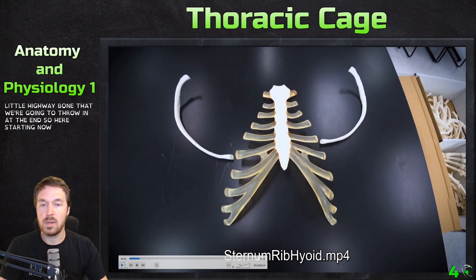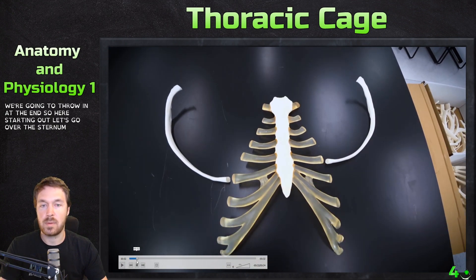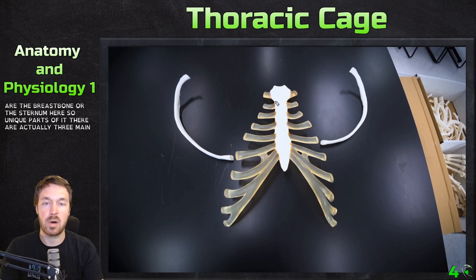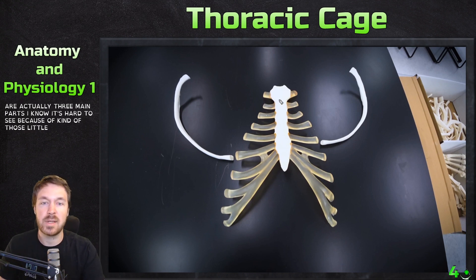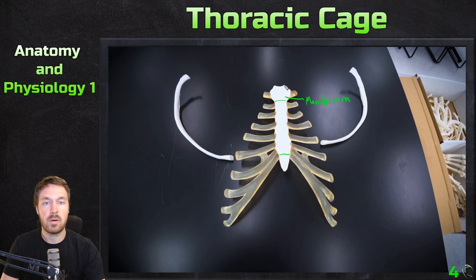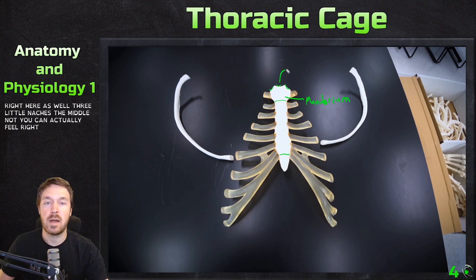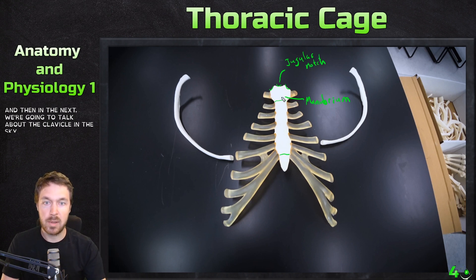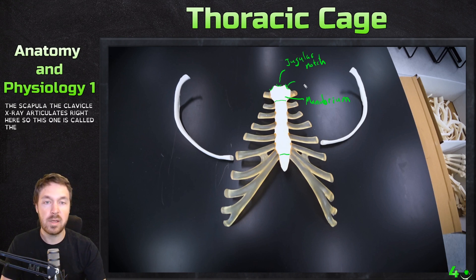Starting out, let's go over the sternum — the breastbone. It has three main parts. There is a joint here and a joint here. The top part of the sternum is called the manubrium, and there are three little notches on it. The middle notch is where you can feel the clavicle; that one is called the jugular notch. The clavicle actually articulates on the sides, so those are called the clavicular notches.